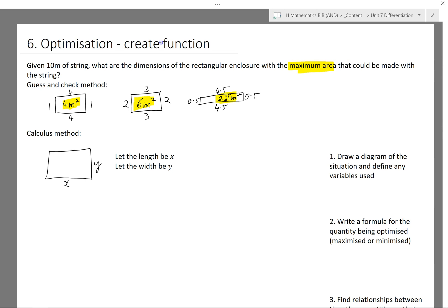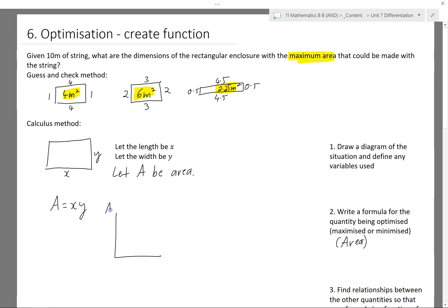and it says what are the dimensions of the rectangular enclosure with the maximum area. So that'll tell me that I'm trying to find a formula for area. In this case, it's area. So I'll let A be area and my formula for area of this rectangle will be A equals x times y. If I'm trying to do calculus and optimize this, I've got two variables. I can't graph A and x and y unless I go into 3D and have mountains and little 3D shapes going around the place.